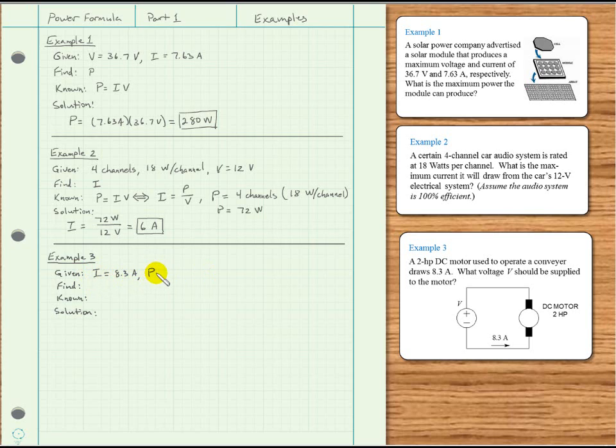Power is 2 horsepower, and we would like to get that into watts. We'll do that in just a minute. Right now, what are we asked to find? A voltage. What information do we know that relates voltage to current and power? We have the power formula in this version: voltage is the power divided by the current.